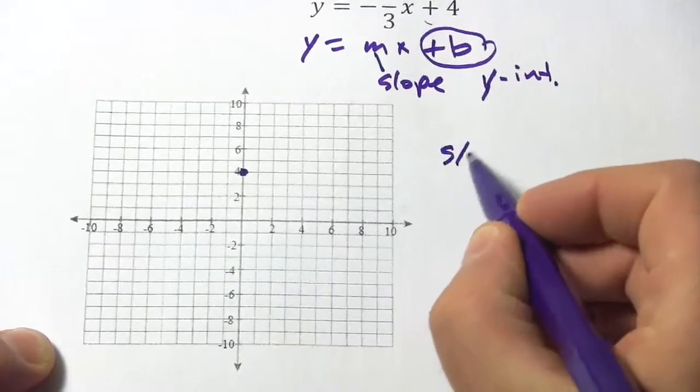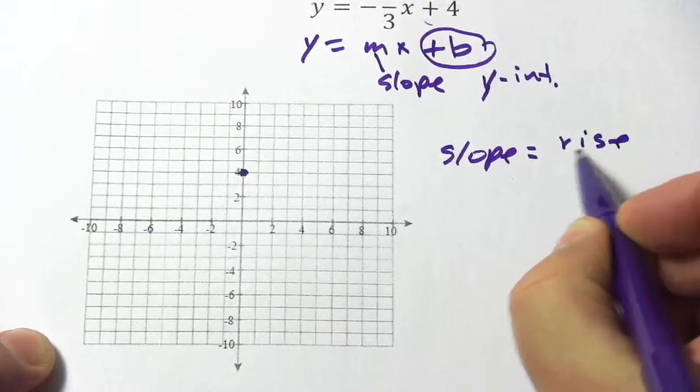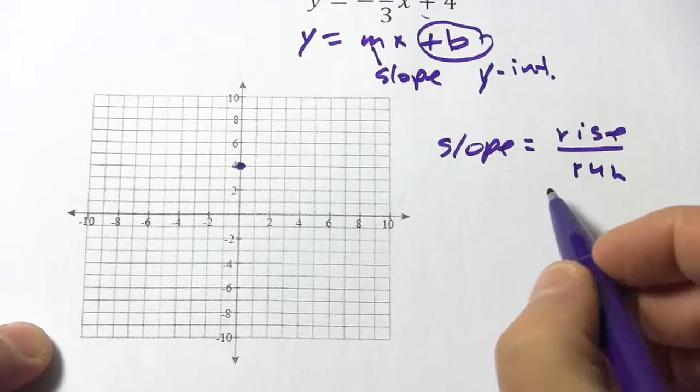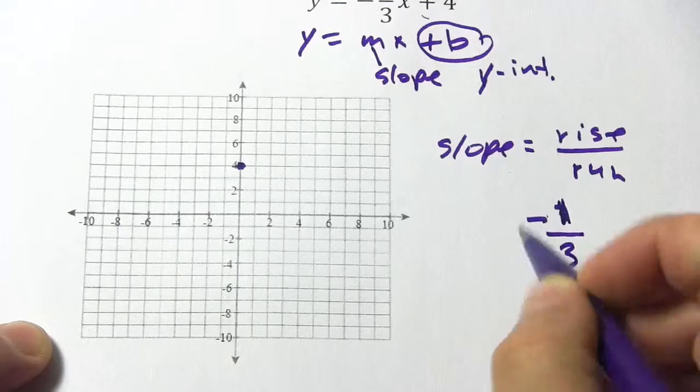And now we have our slope, and remember slope is rise over run, and we have a slope of negative one-third, so what I'm going to do is write that as negative one over three.